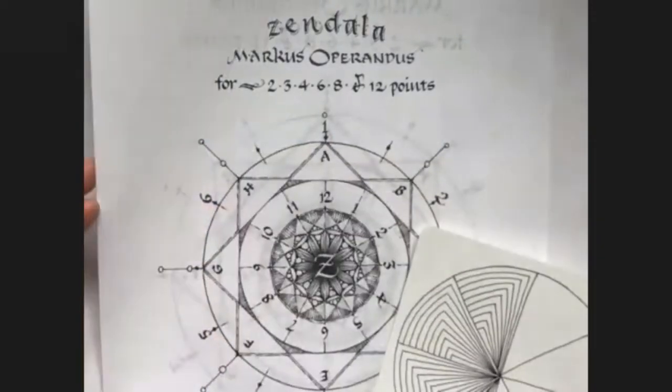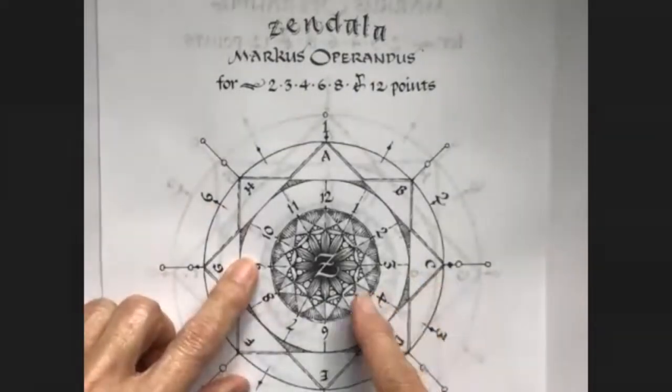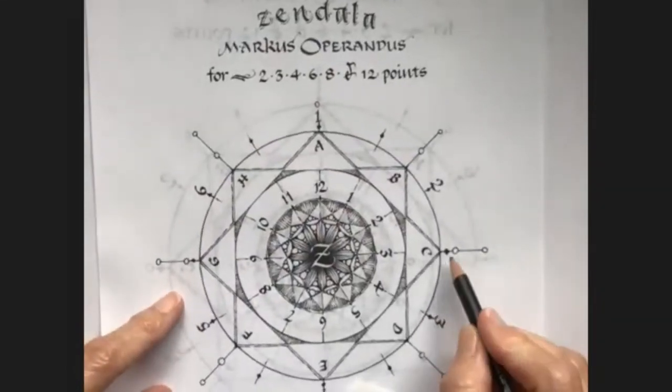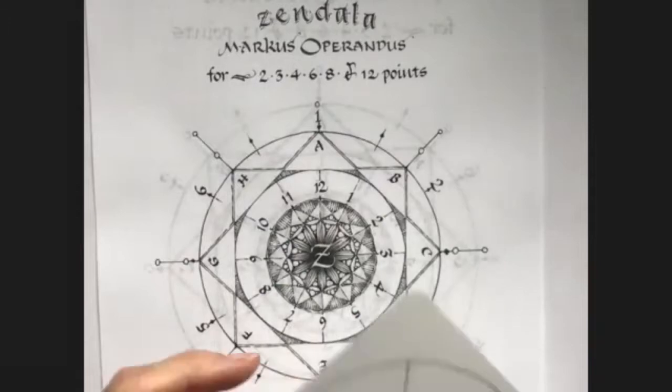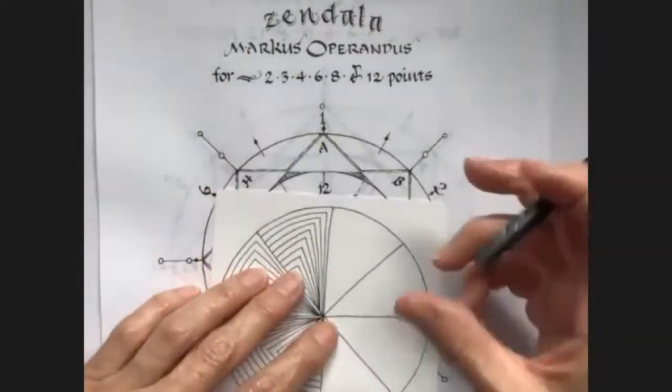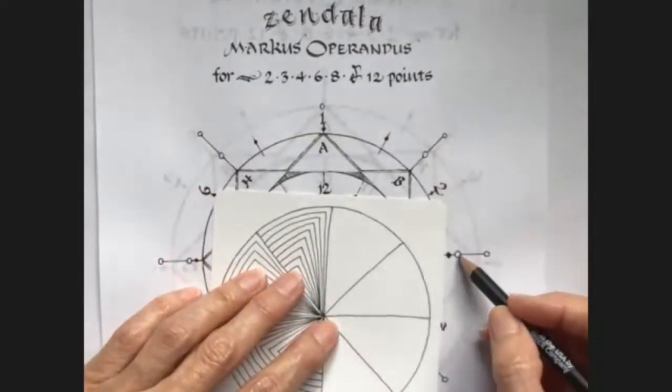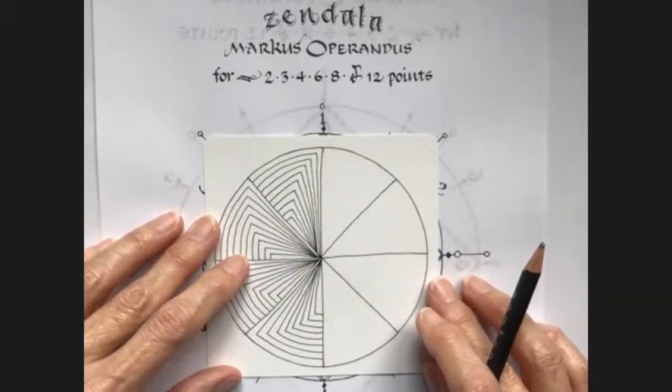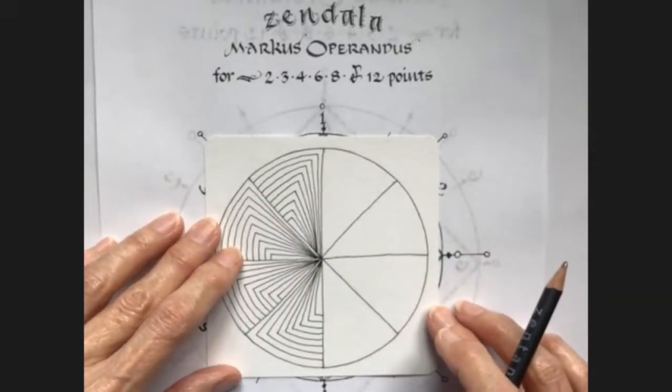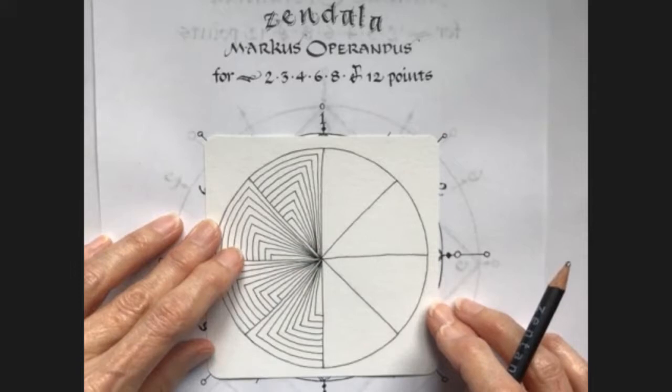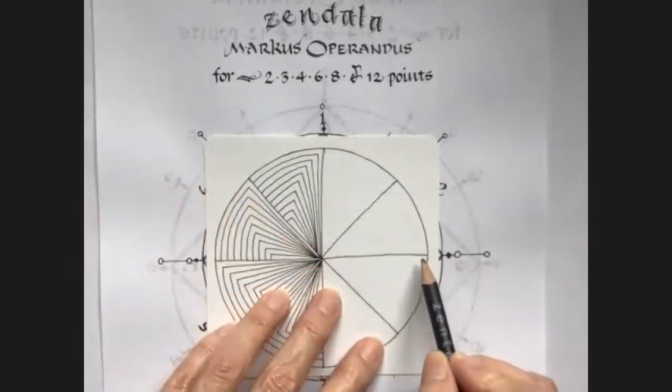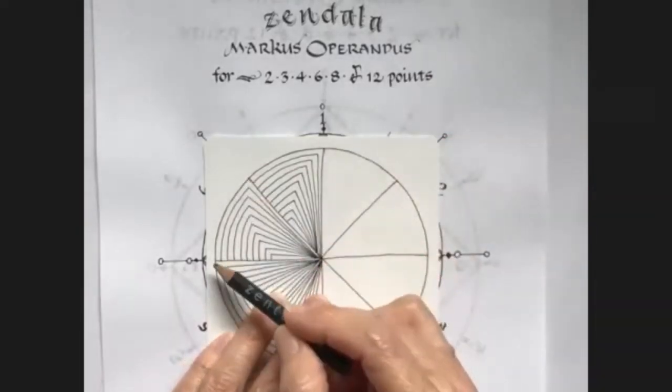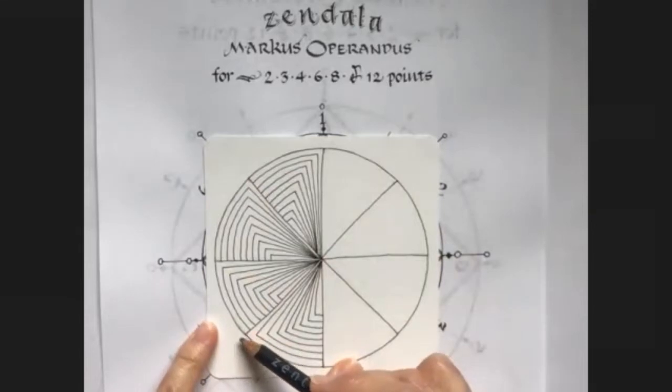Unfortunately, if you print the Marcus Operandus the way that it is, you can't see all the lines. You can add some additional markings out here to get it to work. You could extend these lines a little bit. I drew some extra lines to make that come out big enough that I could put my Apprentice tile on here.